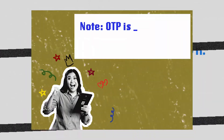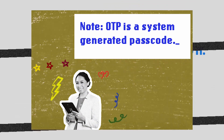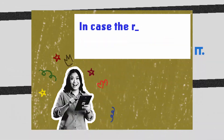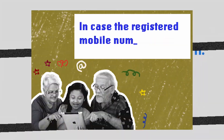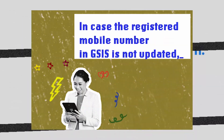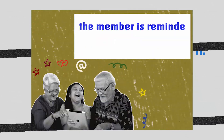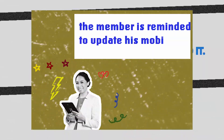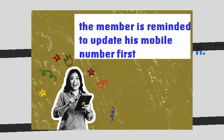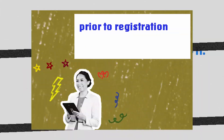The OTP is a system-generated passcode. In case the registered mobile number in GSIS is not updated, the member is reminded to update their mobile number first prior to registration.